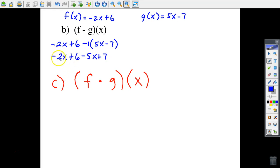Now we're going to put our like terms together: negative 2x minus 5x is negative 7x, and our constant 6 plus 7 is 13. That is the result.